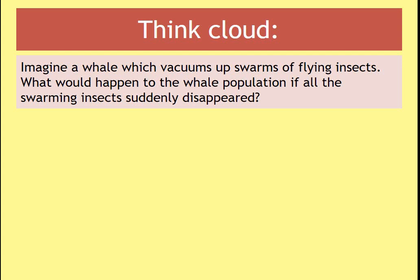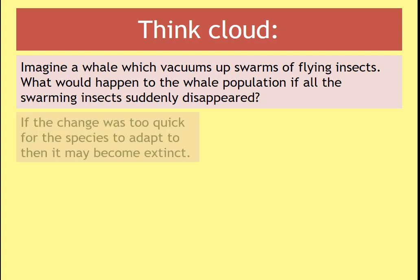Now we're going to have a think cloud. This is a new page. Put a big bubbly cloud shape in the middle with the notes for the main question: a whale that vacuums up swarms of flying insects — not like a normal whale at all. What would happen if all the swarming insects suddenly disappeared? Draw some lines coming out of your cloud and start to put on your ideas. Here are some possibilities — pause the video while you do it, then check.